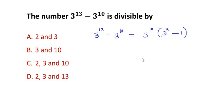Next we are just going to simplify this: 3 to the power of 10, and here 3 to the power of 3 is 27 minus 1.